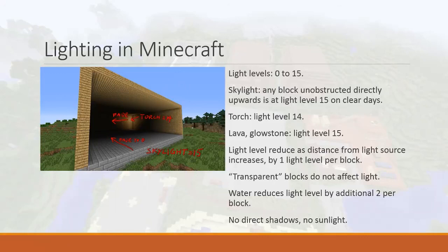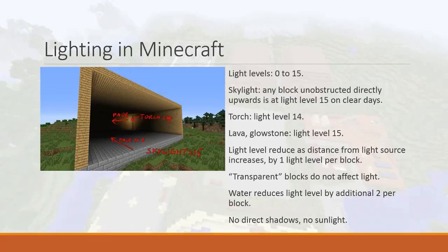Finally, there are no direct shadows and no direct sunlight in Minecraft in the sense that the sun doesn't cast a directional shadow the way it would in real life. There's only skylight, and even the skylight doesn't cast shadows — it only fades as you move away from open air. So lighting in Minecraft is quite abstract and not realistic, but we'll experiment with it anyway. Just keep in mind it's not really helping you design lighting in the real world because it's so unrealistic.